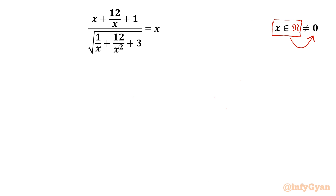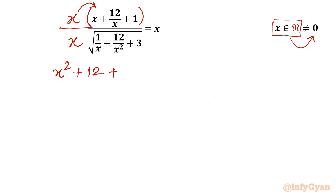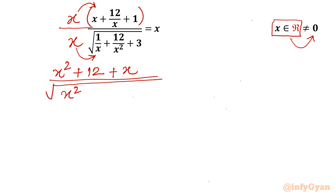Let us get started by considering multiplication of x in the numerator and denominator. We will multiply here also with x. Now let us multiply this x with the bracket: x times x gives x squared, x times 12 over x gives 12, x times 1 gives x, divided by the square root. I will take x into the square root, so I write x squared inside, then 1 over x plus 12 over x squared plus 3. The right hand side is x.